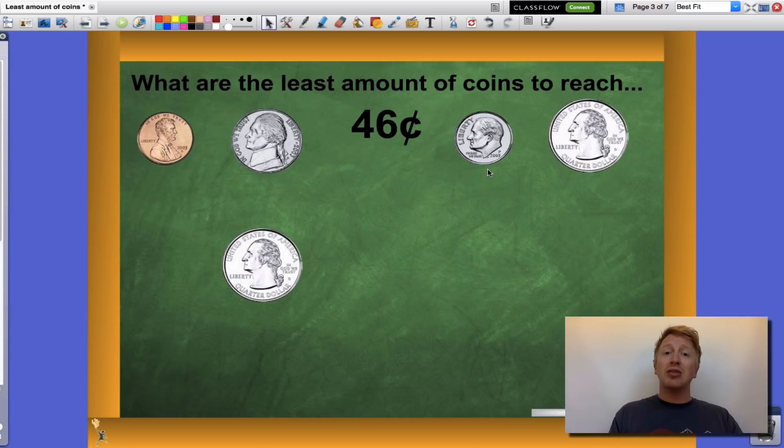So I go to my next largest value, my dime. Dimes are worth ten cents. So if I add one to twenty-five, I'm at thirty-five cents. I actually have room to add even one more. That puts me at forty-five cents.